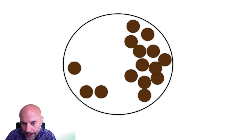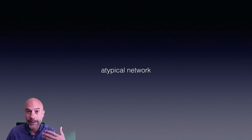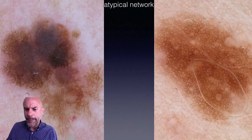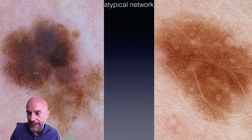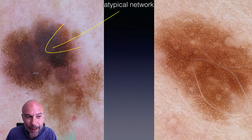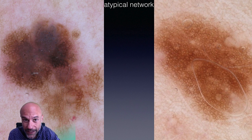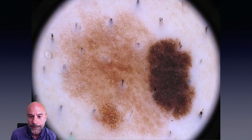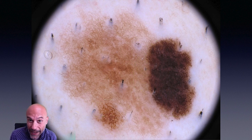What makes each structure regular or irregular, typical or atypical, is not the structure itself but the comparison between different areas of the same lesion. This applies to almost all criteria of melanoma. For atypical network, compare atypical on the left with typical on the right: the right has only one color, one diameter of holes, and same thickness of lines. On the left there is a black network in the upper part and a light brown network below, with much thicker lines above — this difference is precisely what makes the network atypical. In this lesion I would say we see three different types of network, and that is why it is atypical.